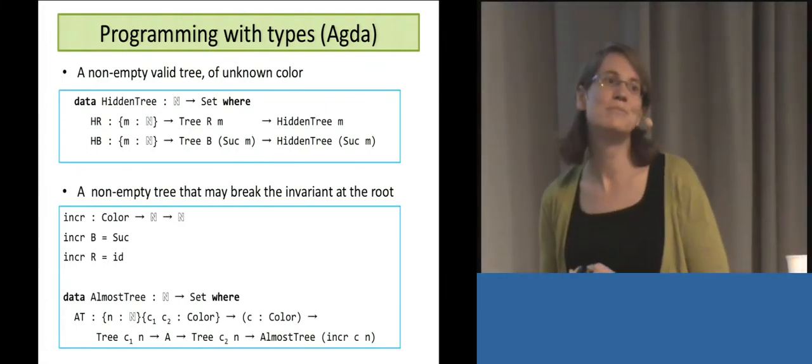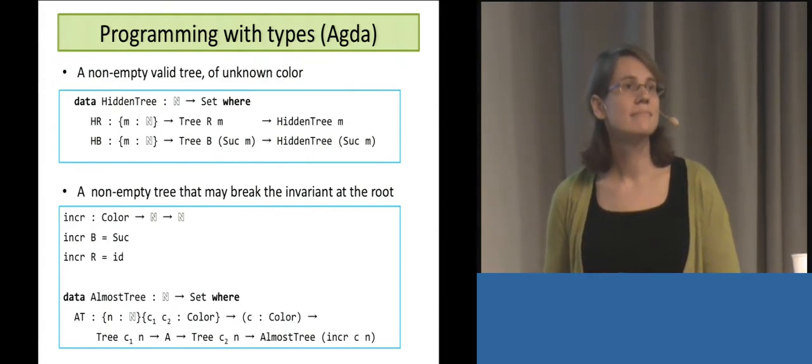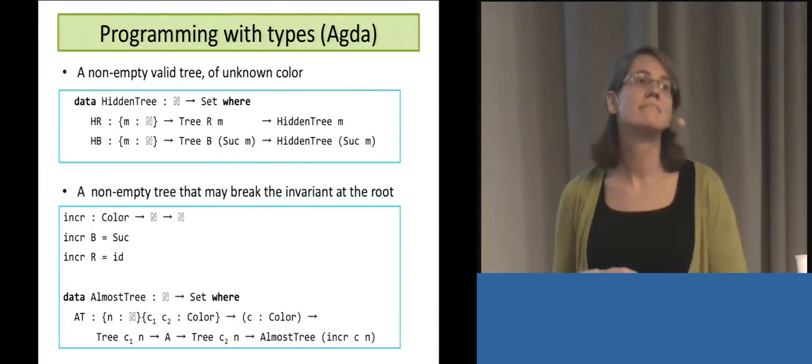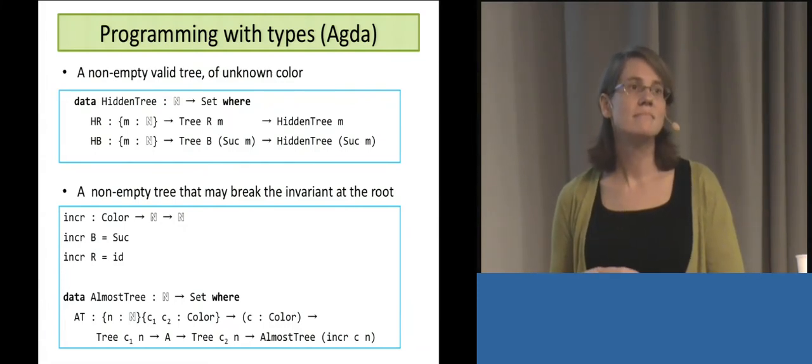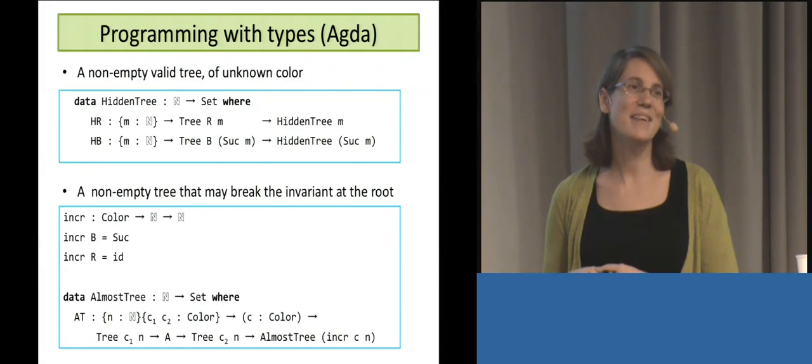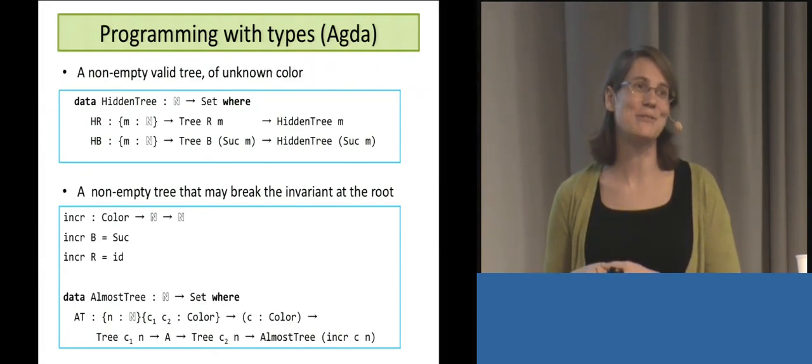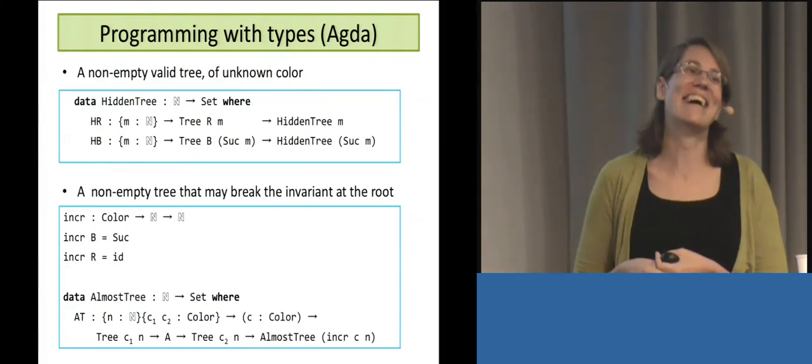I take it that one of the benefits that you see from the work of dependently typed programming into Haskell is that you get a dependently typed language with some other useful properties. Now you identified not needing to show totality and you showed us that you could reduce the size of the code substantially because of that.